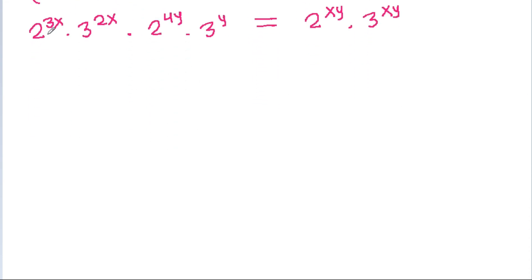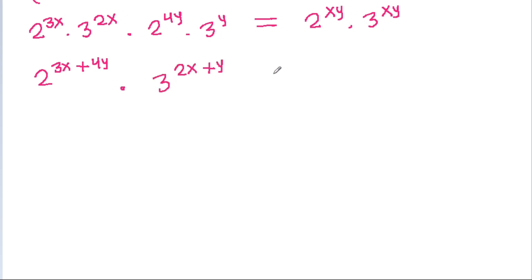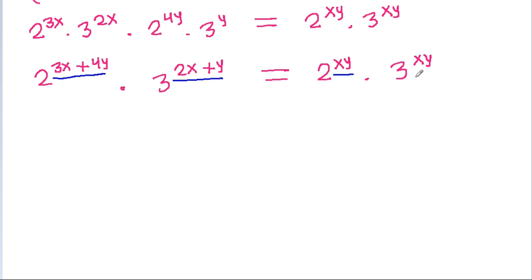Combining the powers of 2 on the left side gives 2 power (3x + 4y), and combining powers of 3 gives 3 power (2x + y), equal to 2 power xy into 3 power xy. Since 2 and 3 are prime numbers, we can compare the powers of 2 and powers of 3 separately.